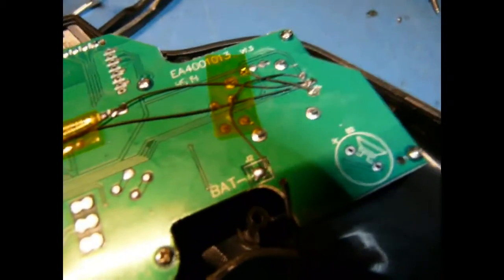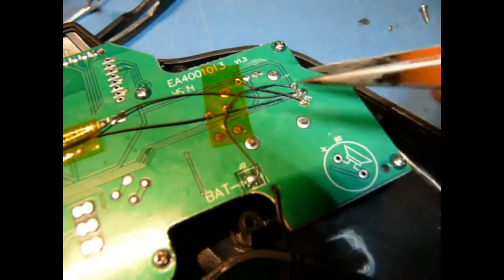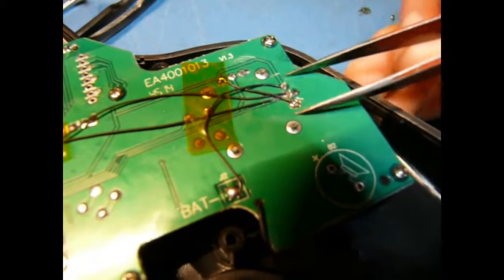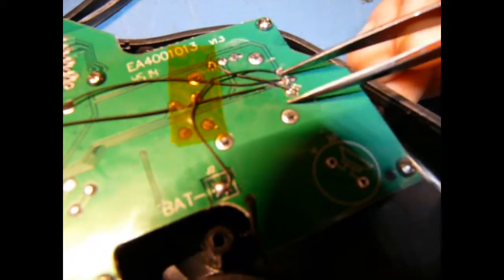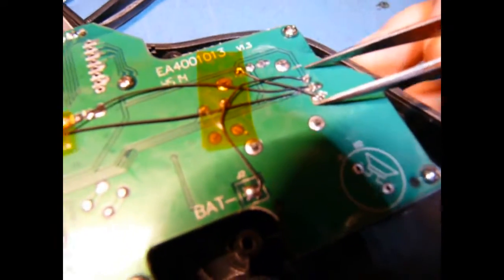And unfortunately, flipping the controls left and right has the unintended consequence of reversing the polarity of the signal. So you're going to have to reverse the voltage input to the potentiometers.